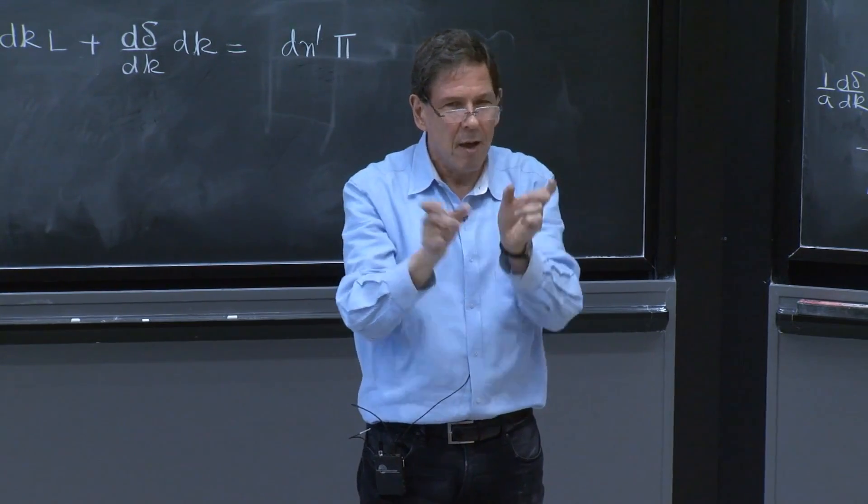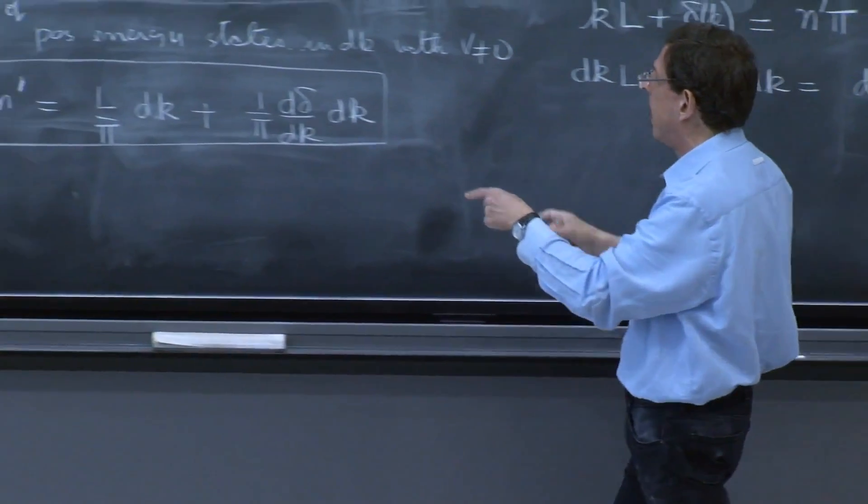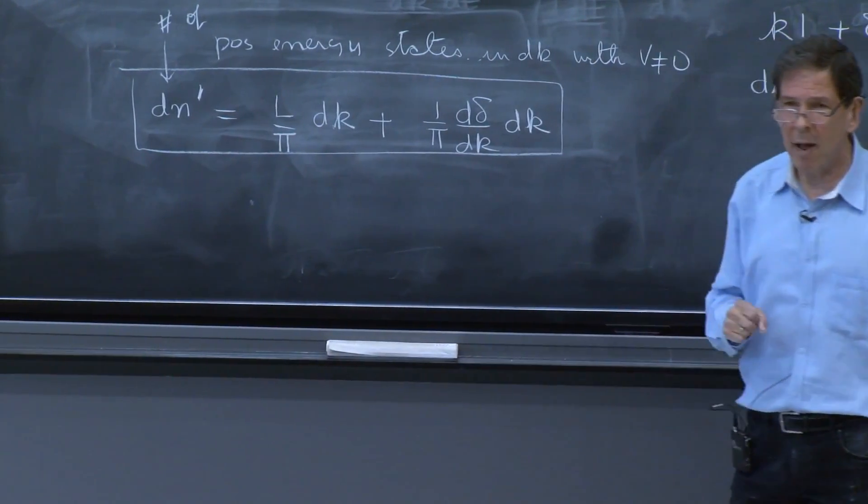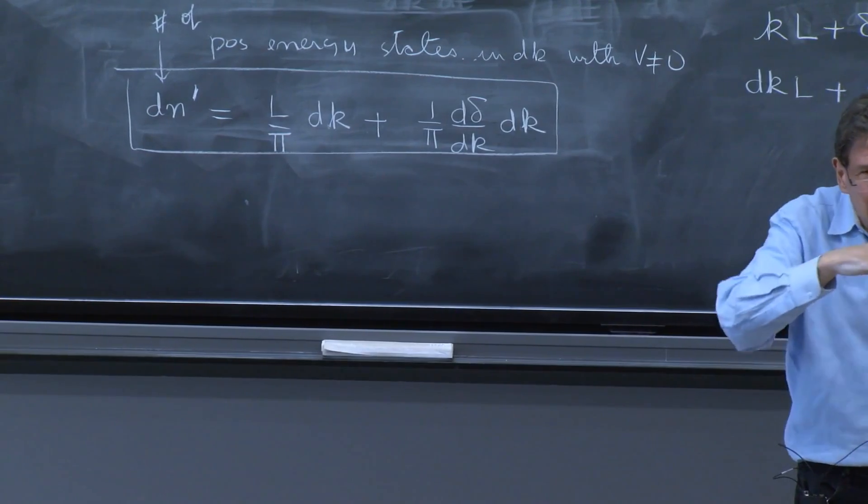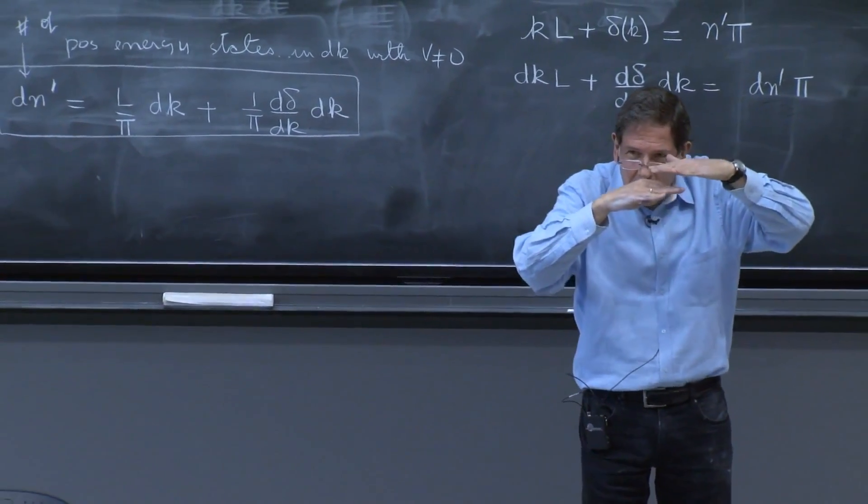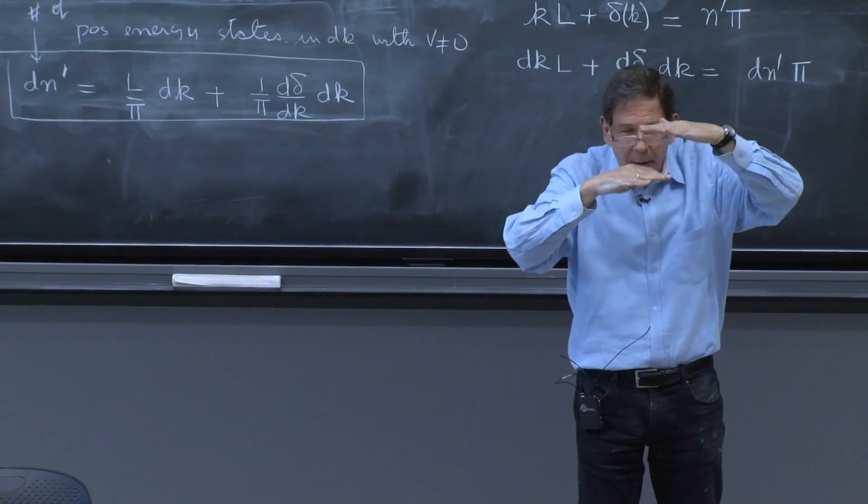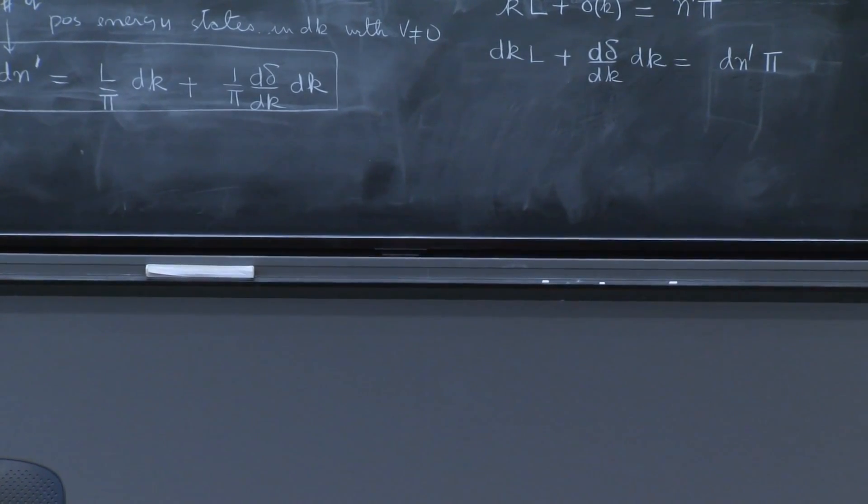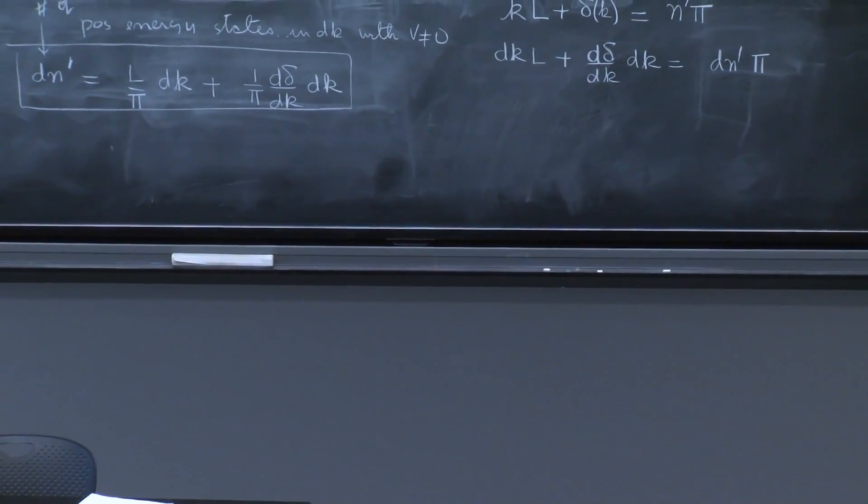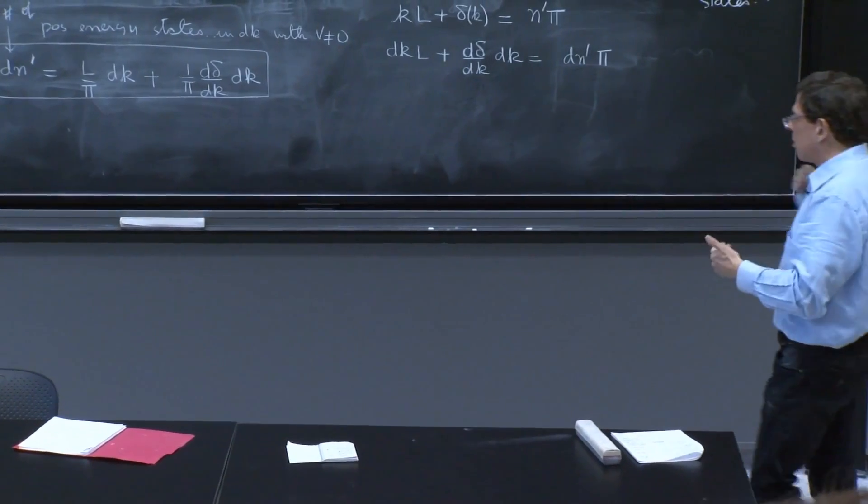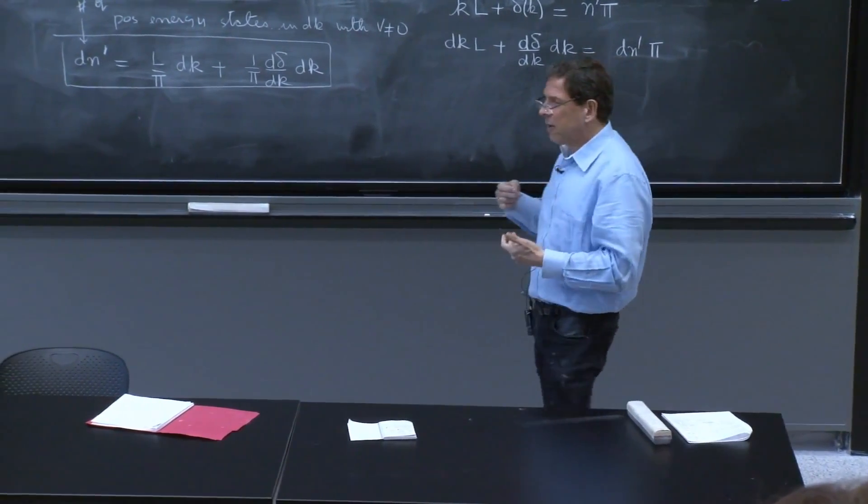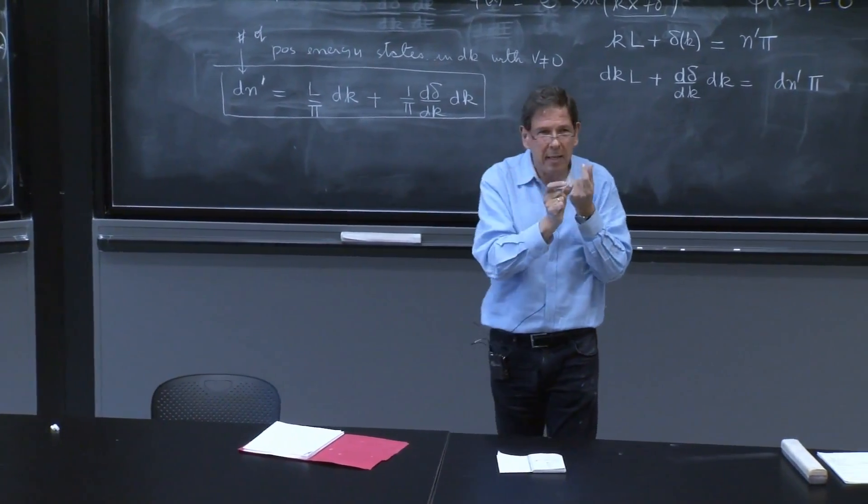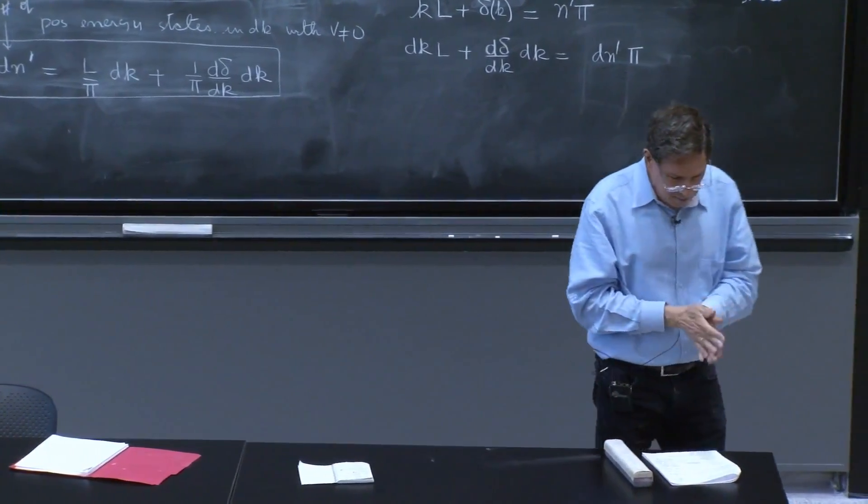It has changed. Because these two equations, dn for equal dk, but dn is not equal to dn prime. In one case, the energy levels or the momentum levels are more compressed or more separated. But whatever it is, whatever the sign is, there's a little discrepancy. So if I take the difference, I will get some information.